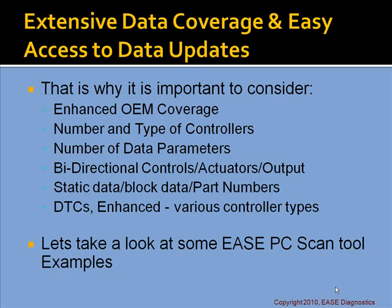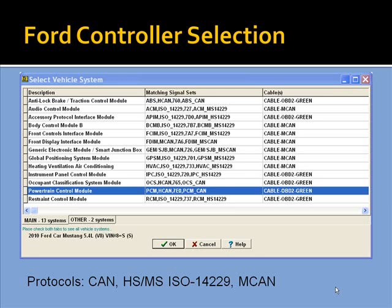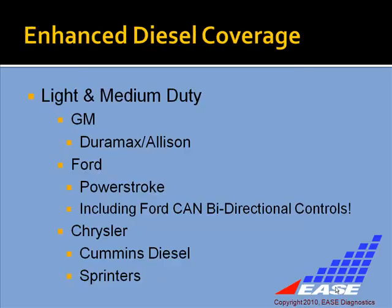Let's take a look at some Ease PC Scan Tool examples. Here's a GM controller selection on a 2010 Chevy — you can see quite a few controllers across powertrain, body, and chassis, including ABS, airbag, body, brake controllers, engine, and transmission. Very similar for Ford — all the enhanced controllers on a 2010 Mustang. Chrysler also has a lot of controller support for powertrain, body, and chassis.